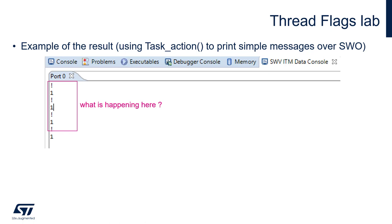Once we press the button, we can see an exclamation mark on the SWO interface. It is coming from the external interrupt callback, after the flags set operation for Task 1. Just after, we can see the 1 mark displayed by Task 1, after it receives the desired flags mask.